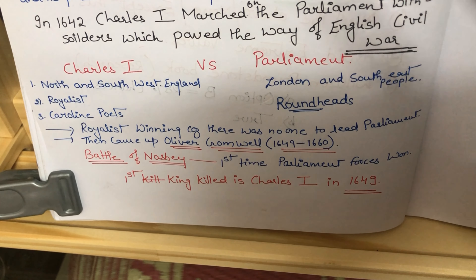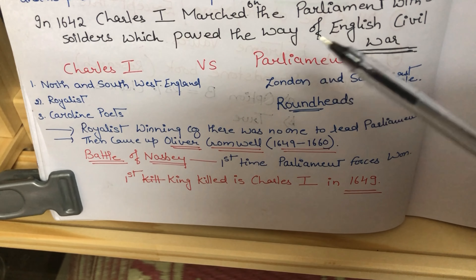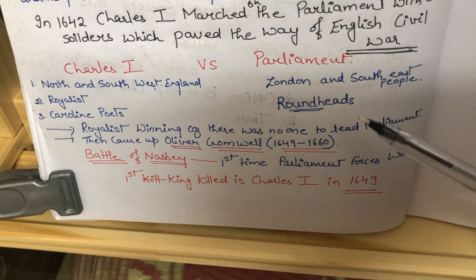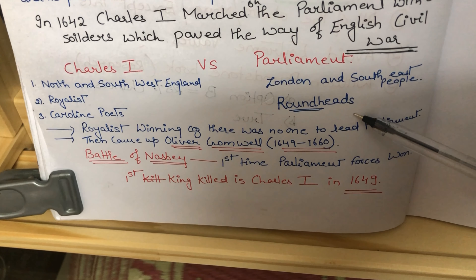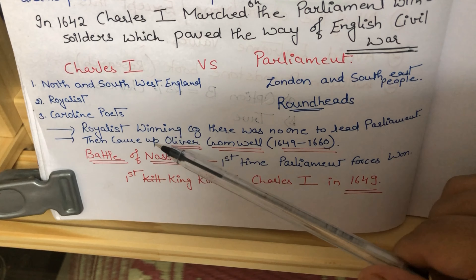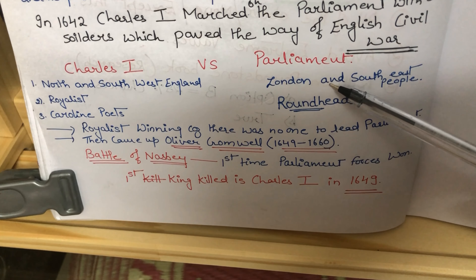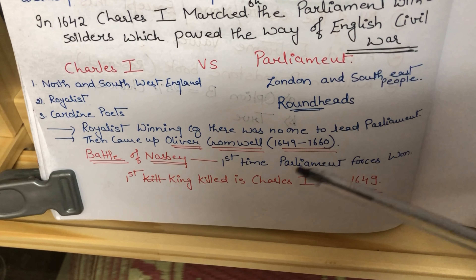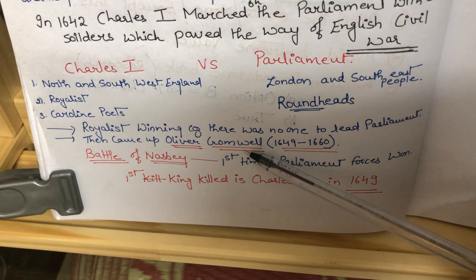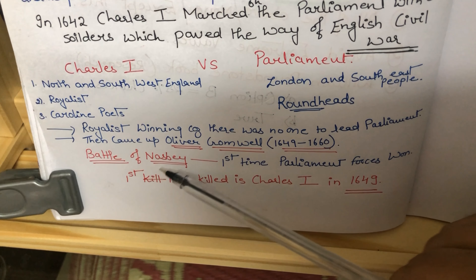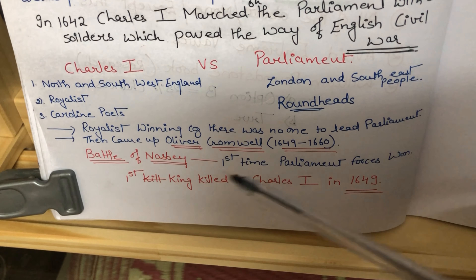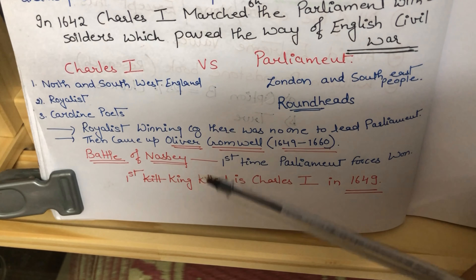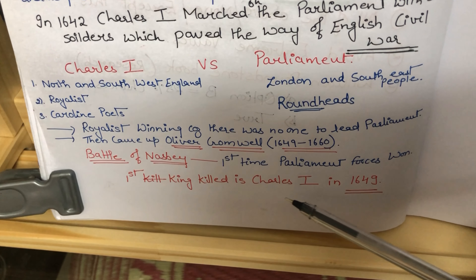The English Civil War was the war between Charles I and the parliament. Supporting Charles I were North and South-West England, the Royalists, and the Cavalier poets. Supporting parliament were London and South-East England and the Roundheads, that is the Puritans. Initially the Royalists were winning because there was no one to lead the parliament. But then Oliver Cromwell came and led the parliamentary forces. In the Battle of Naseby, the parliament forces won for the first time. Charles I was executed in 1649, making him the first king to be killed in this manner.